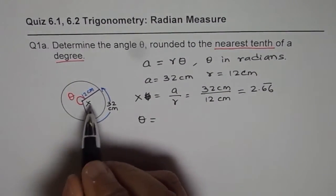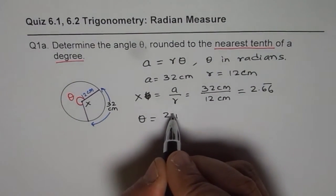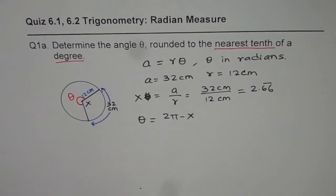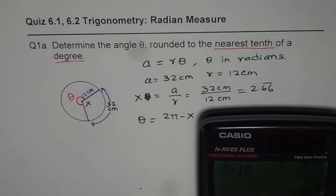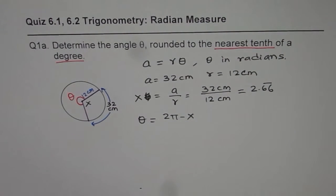So the angle theta will be actually 2π minus x. Let's use your calculator to find 2π minus x. So we'll do 2 times π, so we'll get 3.6165. So what we get is 3.6165